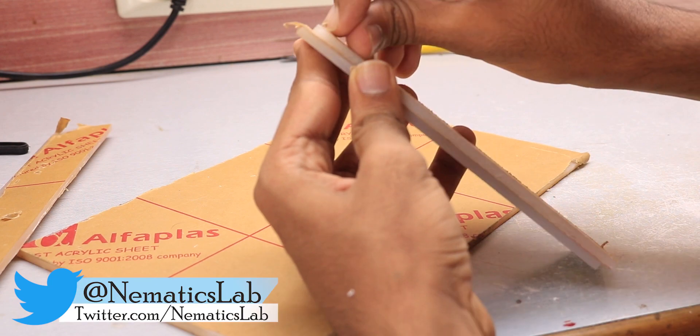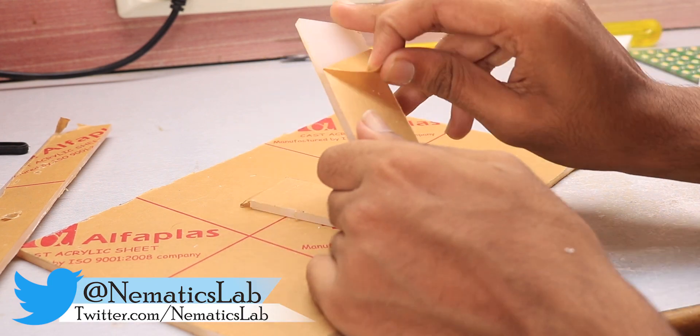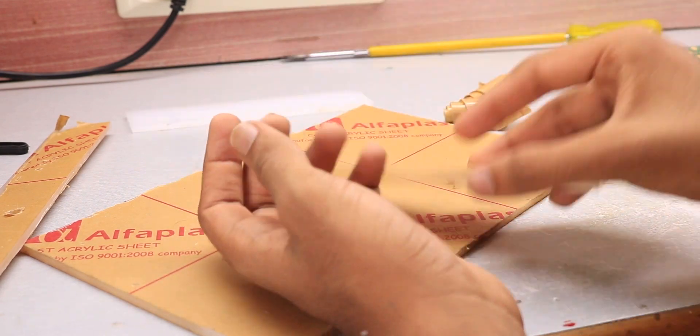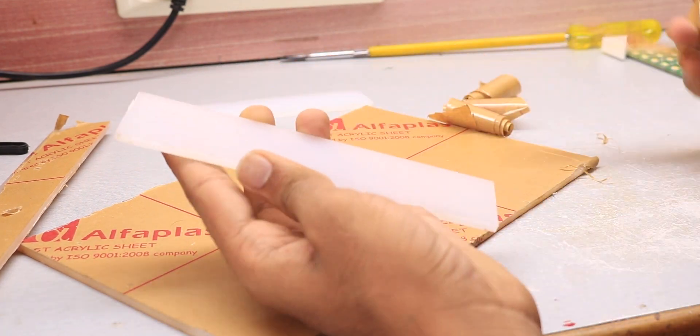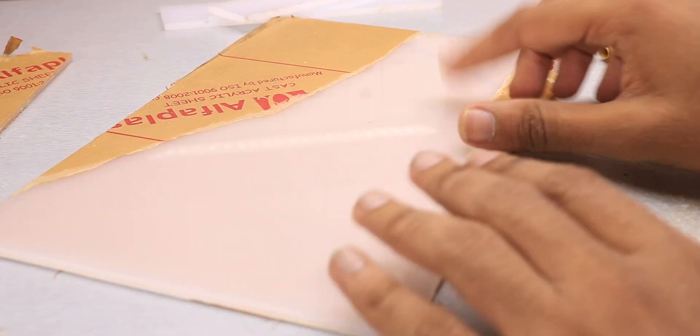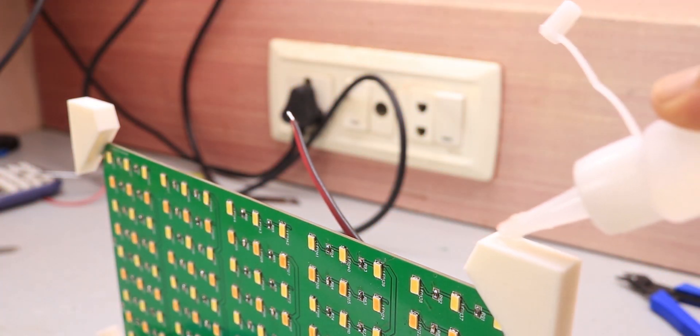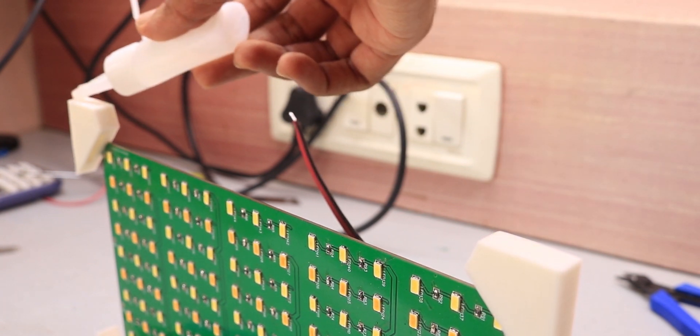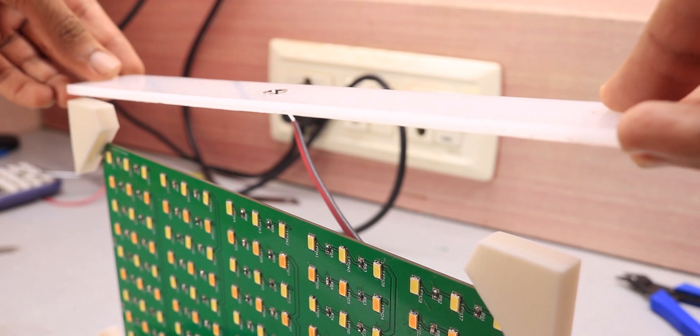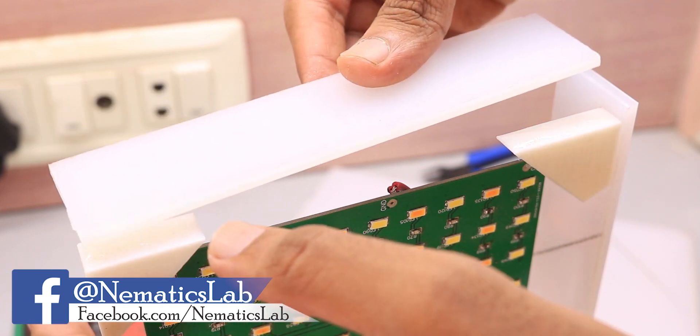Now just remove all the protective film which is attached to the acrylic sheet. Once that was over, now just use some super glue and attach the bottom piece and the two side pieces. And hopefully don't mess up like me.